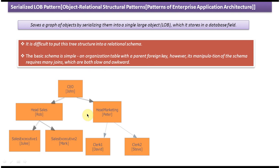So what we can do is serialize this graph of objects. Graph of objects means each object is related to each other like a big tree structure. So we can serialize this graph of objects into a single large object called LOB.